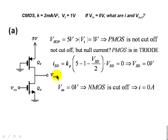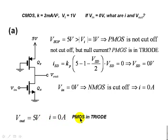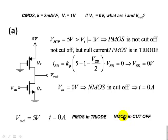The interpretation is that VSD = 0 means Vout = 5 volts. So for Part A, Vout = 5V, the current through both transistors is 0 amps, the PMOS is in triode mode, and the NMOS is in cut-off mode. We are done with Part A.